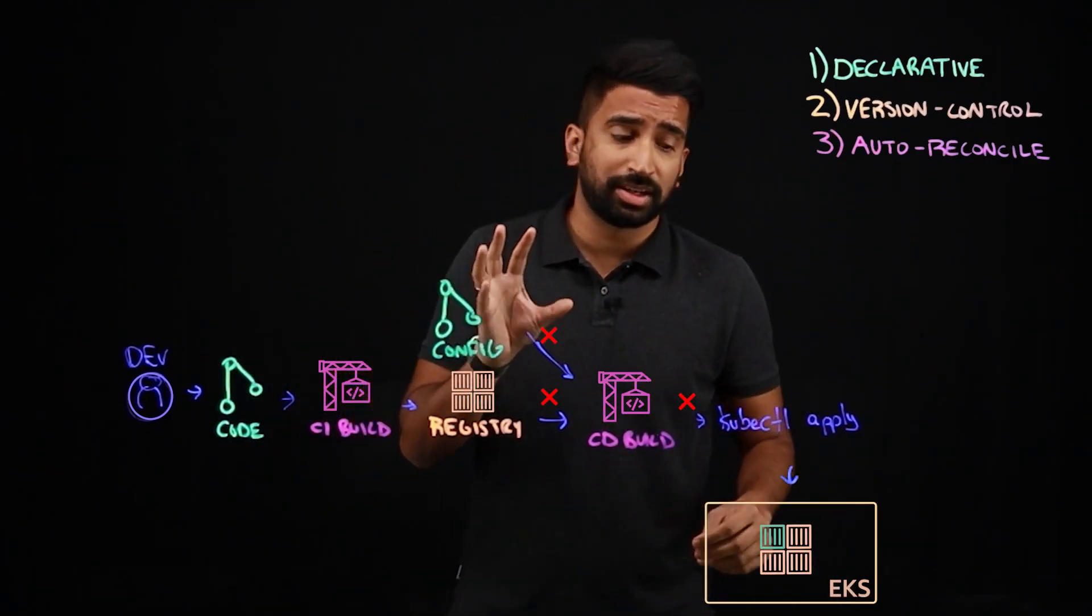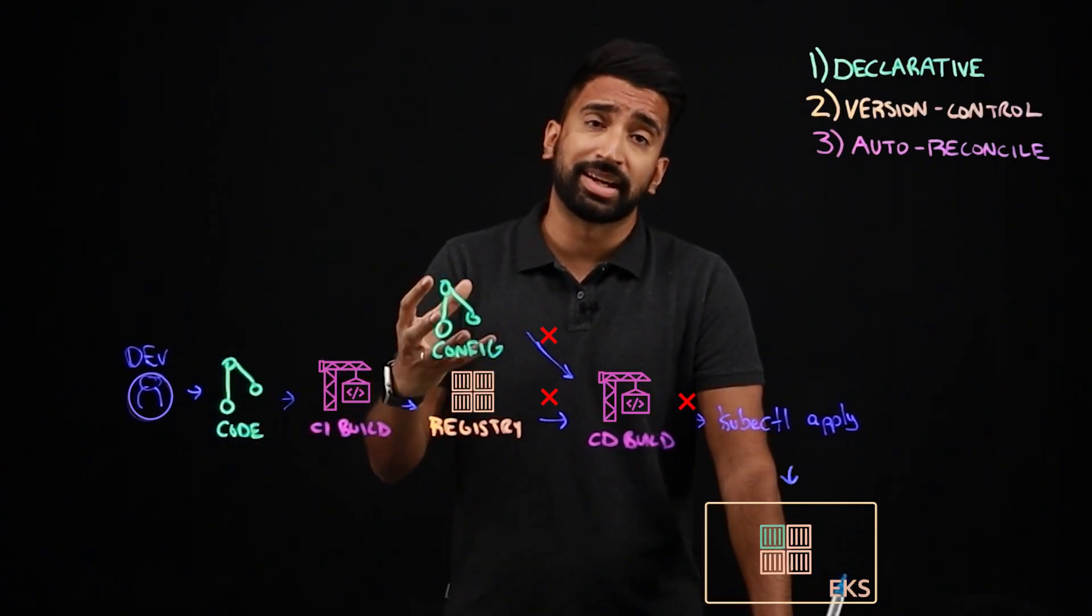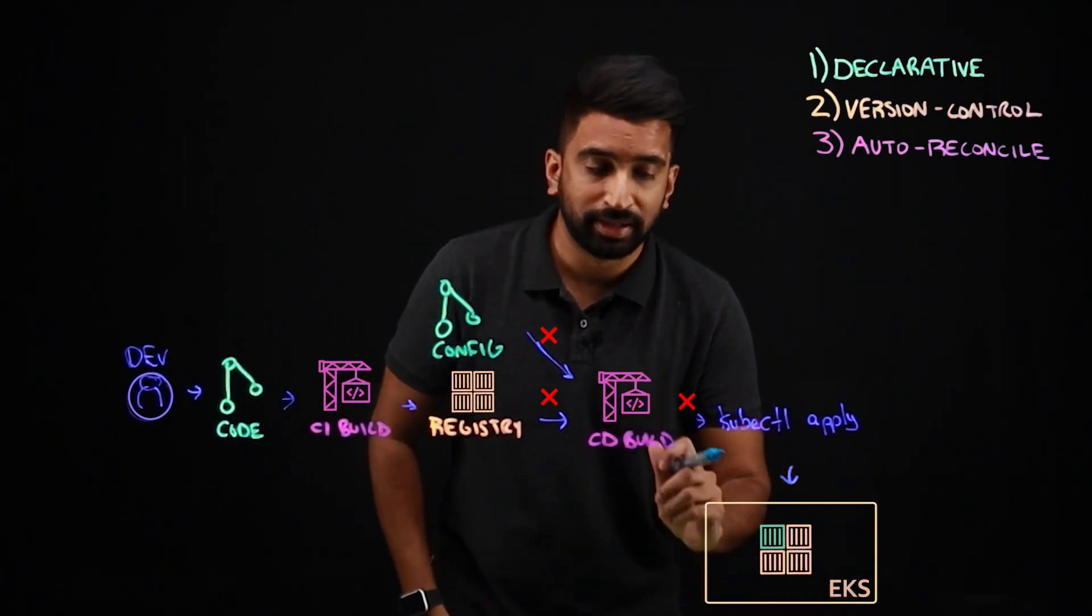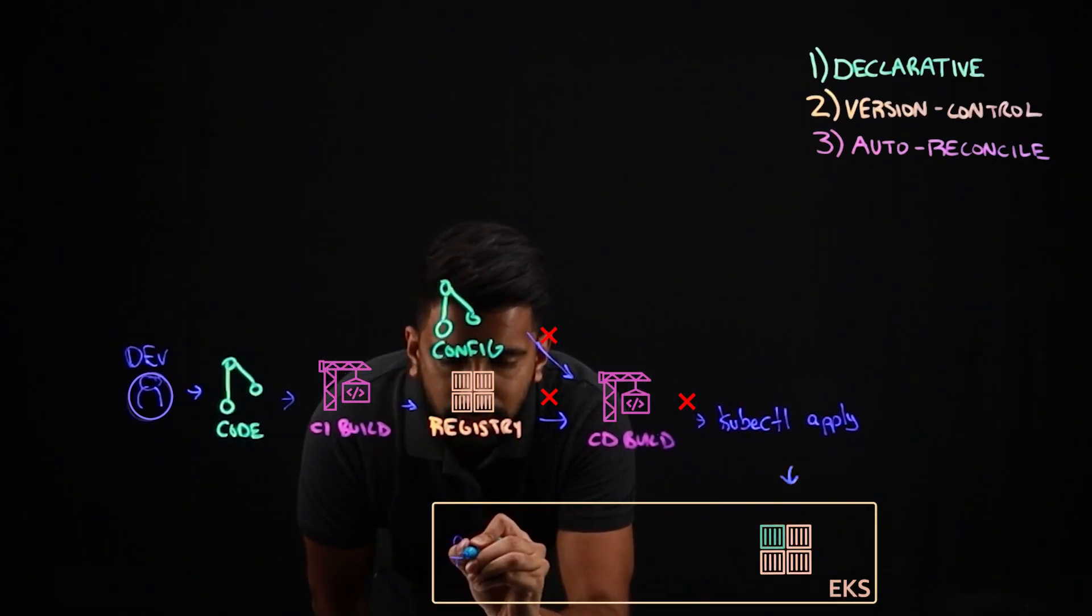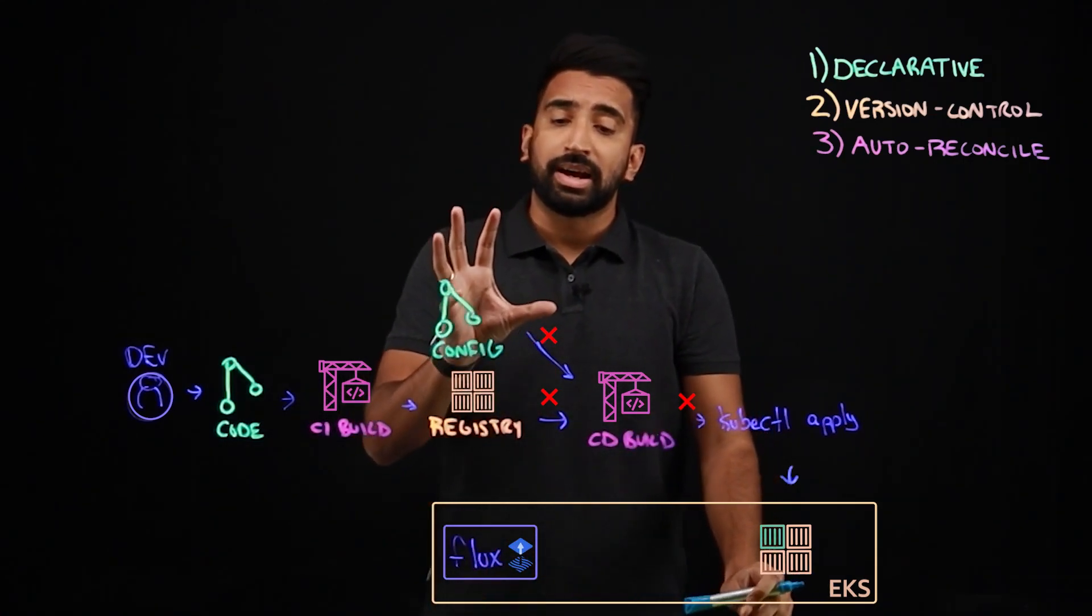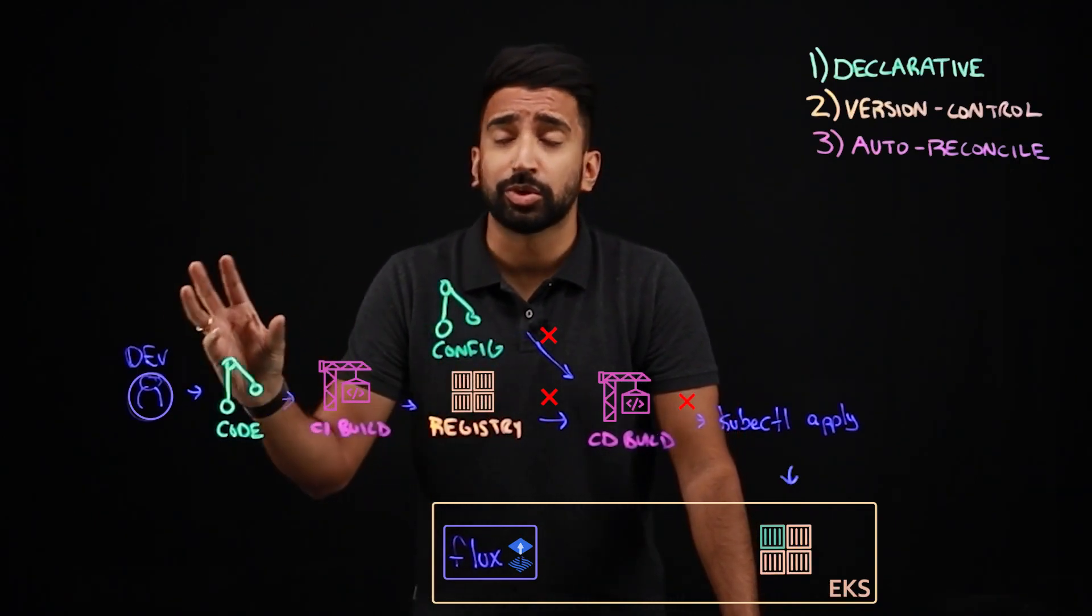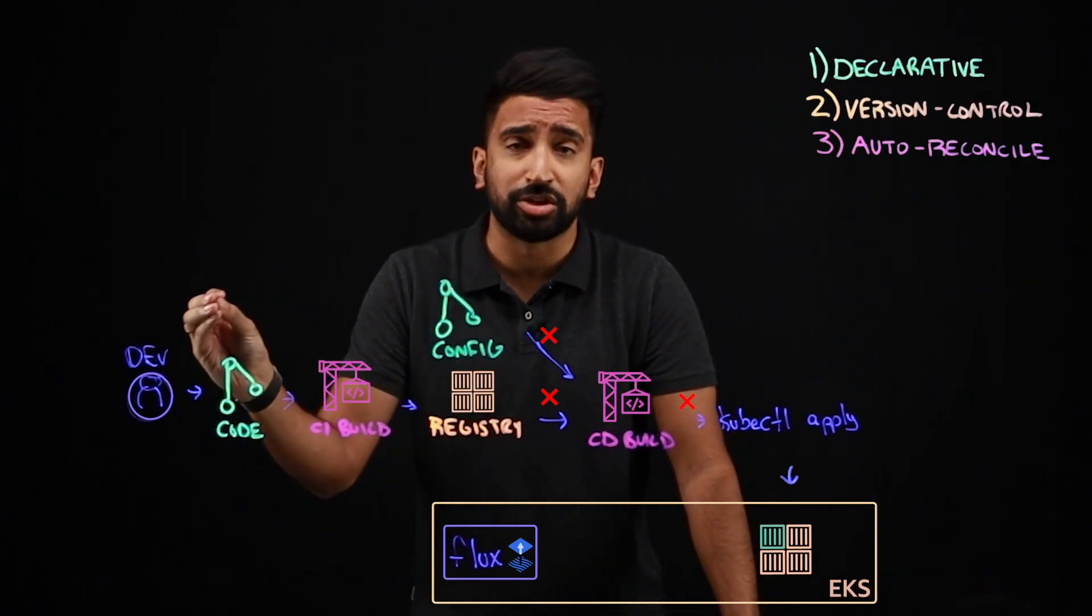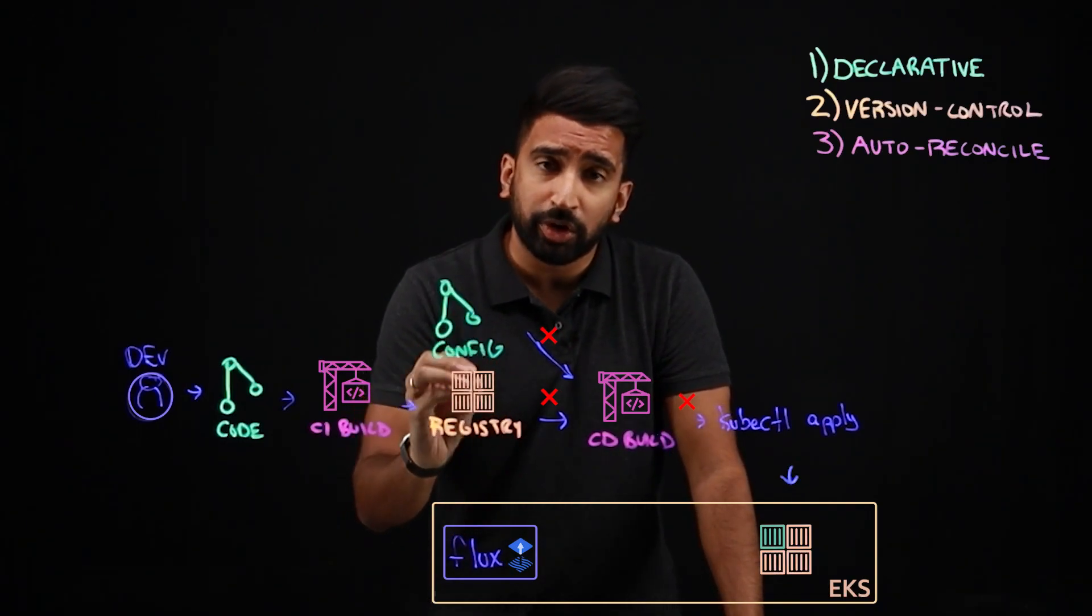Okay, so here's where Flux comes into the picture. Flux is an open source tool for reconciling the state of your config and your environment. So Flux, let's extend out our cluster here. So Flux will be installed on our cluster. Now we can register this container registry as a source of truth. So whenever a new image gets pushed out, a new version of the code, a new container image gets created, Flux will be notified.